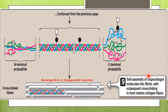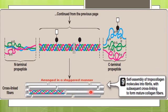Tropocollagen undergoes self-assembly into fibrils through the process of cross-linking. One chain of tropocollagen becomes cross-linked with another tropocollagen chain, and as a result, mature collagen fibers are formed. We will now see the process of cross-linkage in detail.